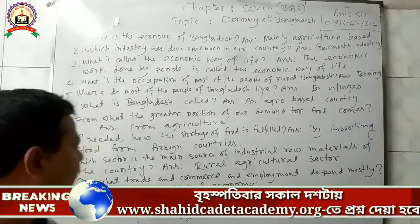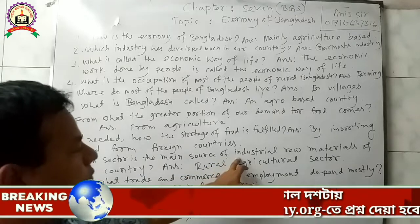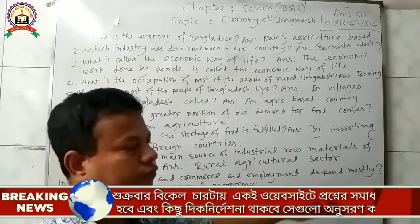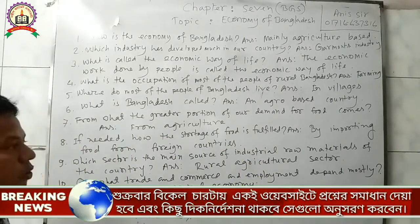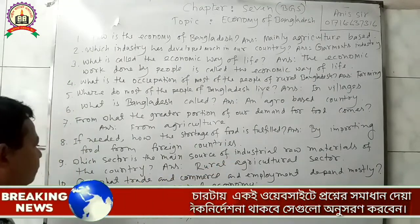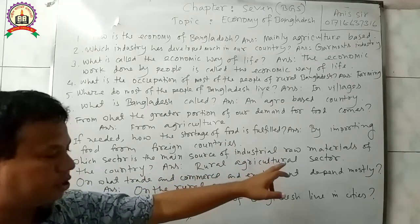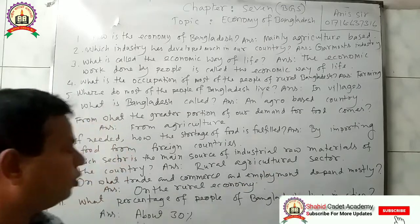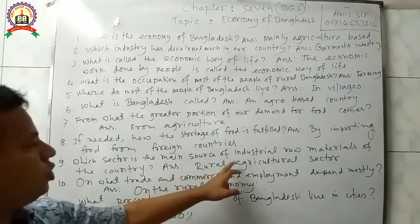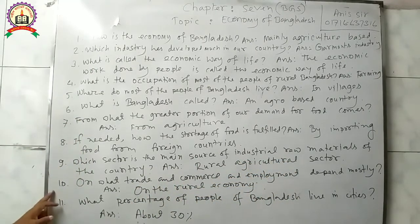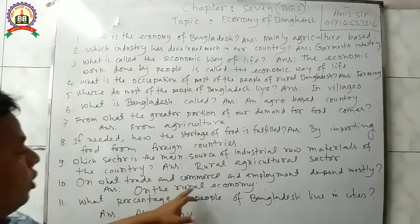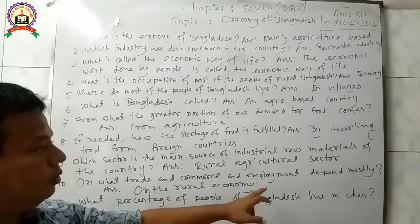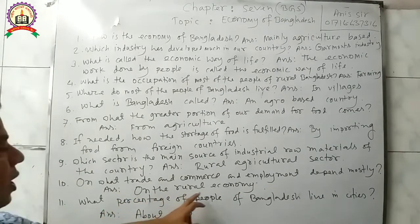Question 9: Which sector is the main source of industrial raw materials of the country? Answer: The rural agricultural sector is the main source of industrial raw materials. Question 10: On what do trade, commerce, and employment depend mostly? Answer: They depend mostly on the rural economy.